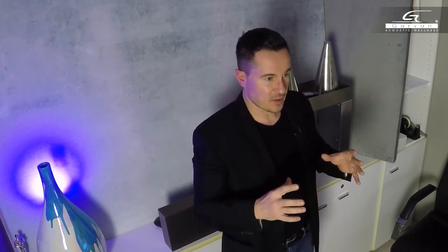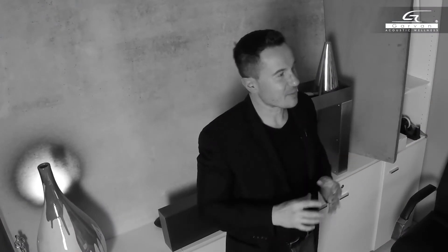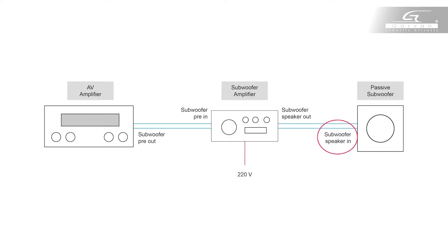A passive subwoofer, on the other hand, needs an amplified signal to function. Essentially, we start from our audio-video amplifier — for example, in a 5.1 system — and we go from the pre-sub output of our amplifier to the input of another amplifier dedicated entirely to our subwoofer. Then, from the output of that dedicated amplifier, we go to the input of our passive subwoofer.